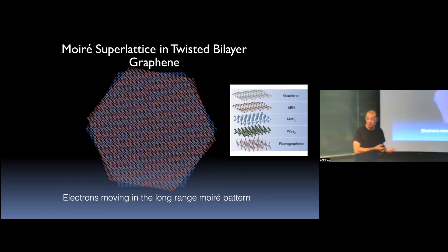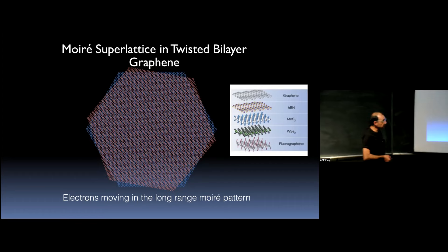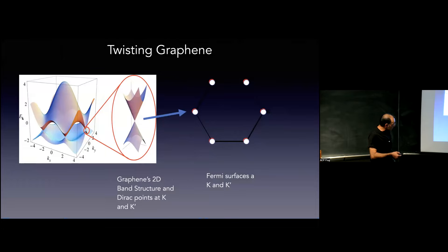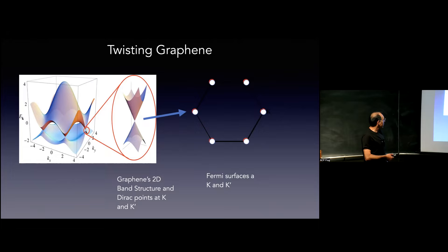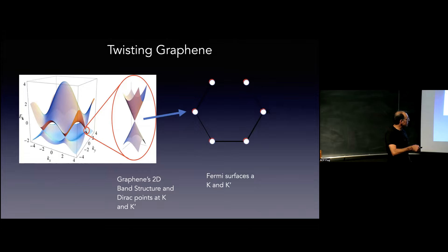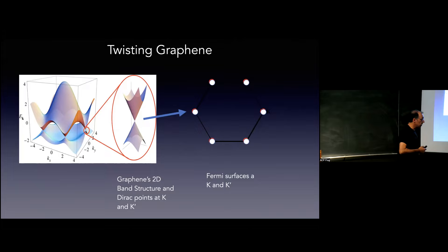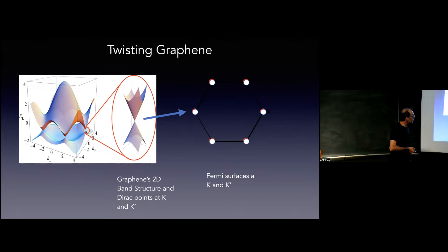What happens to the electronic properties of graphene when you do this? Graphene has a very special band structure: the carbon atoms' band structure gives you two bands that touch each other in the band structure, in momentum space — these are the Dirac points, the touching points between the conduction and valence bands. Graphene is a zero band gap semiconductor with this very special Dirac spectrum as its low-energy quasiparticle.